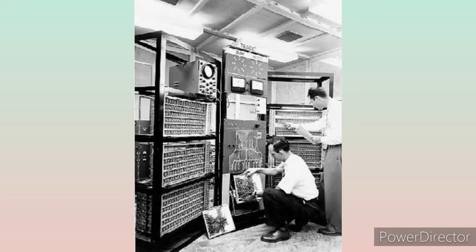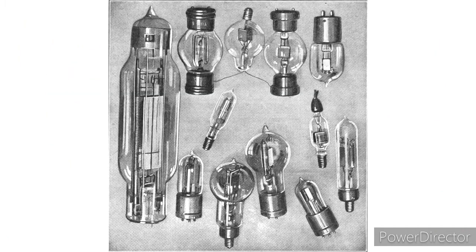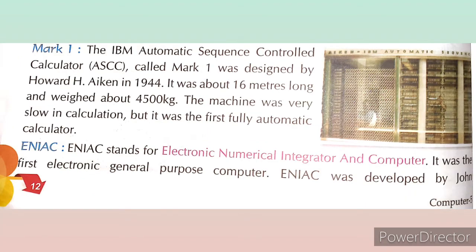Computers were of big size and it was difficult to handle them — the size of the computers was too large in the first generation, so it was very difficult to handle them easily. They consumed a lot of electricity and generated a lot of heat. Vacuum tubes work like electric bulbs, so they consumed a lot of electricity and produced a lot of heat. These computers were extremely slow and quite expensive to operate.